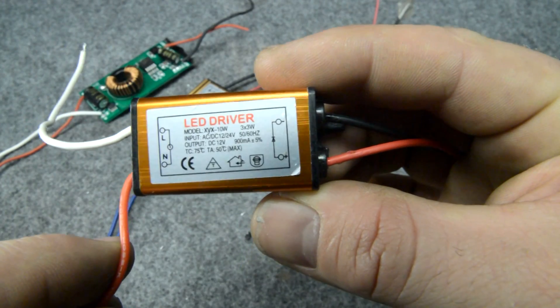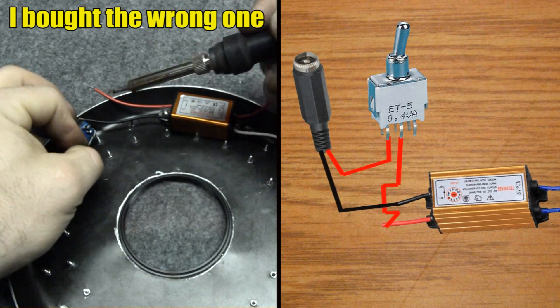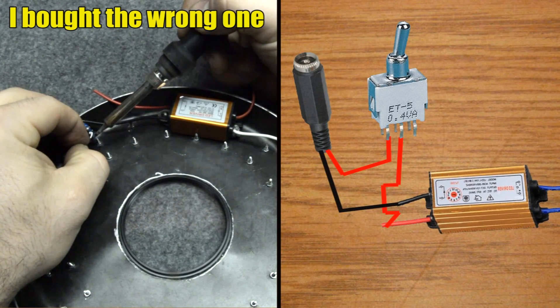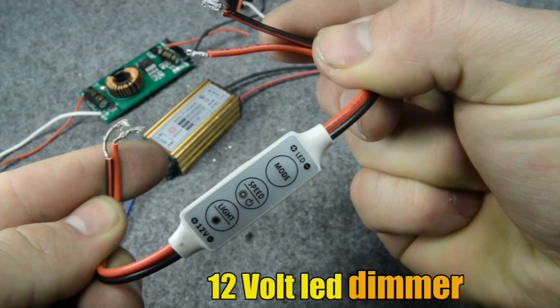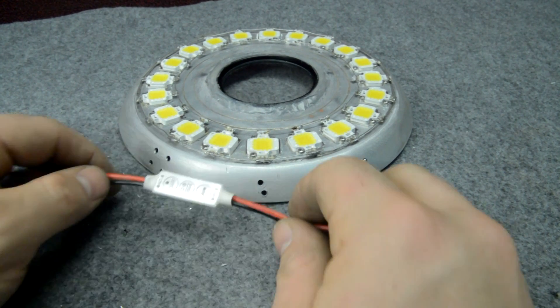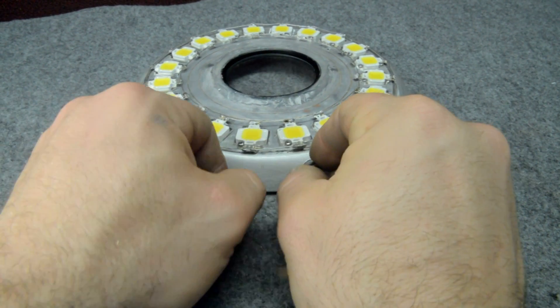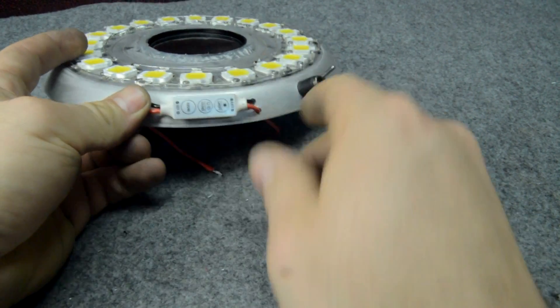To drive the LEDs we need a driver. In this case I bought a wrong one and it isn't very powerful - I bought a 10 watt driver but in this case I need a 200 watt LED driver. But I prefer to use a 12 volt LED dimmer. The dimmer helps me to control the power that goes to the LEDs just using some buttons.